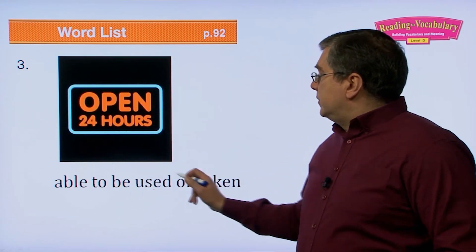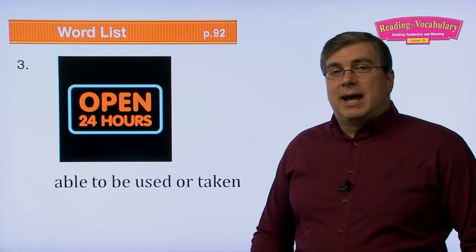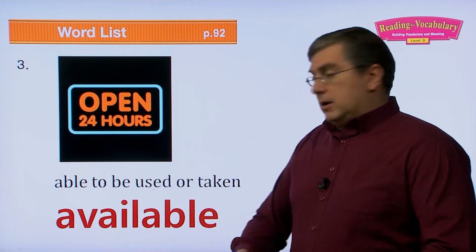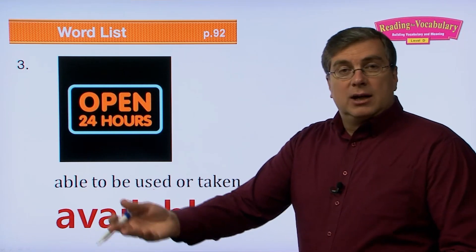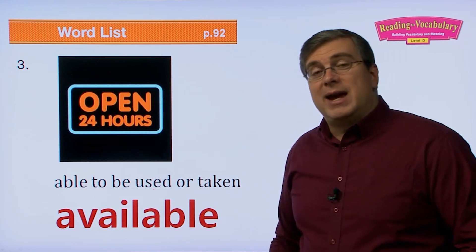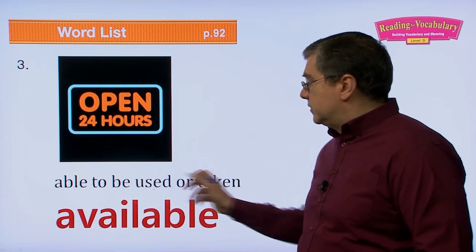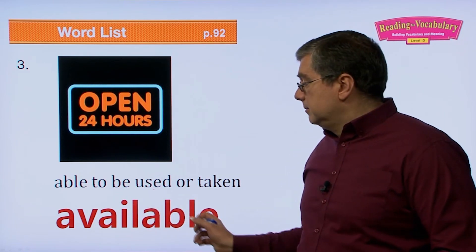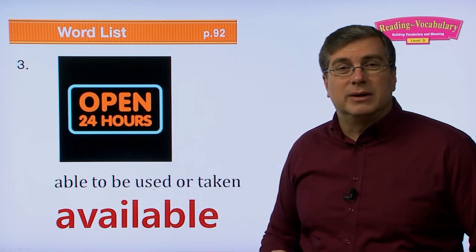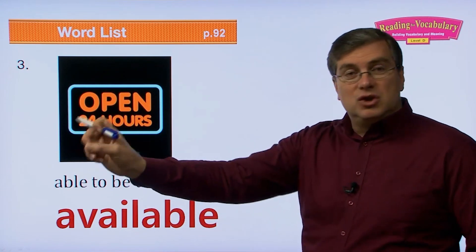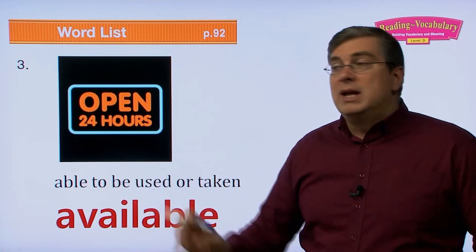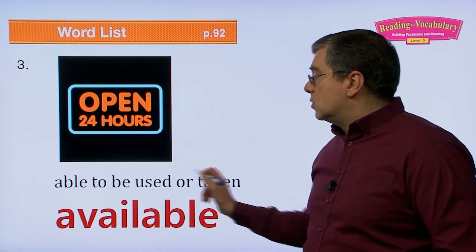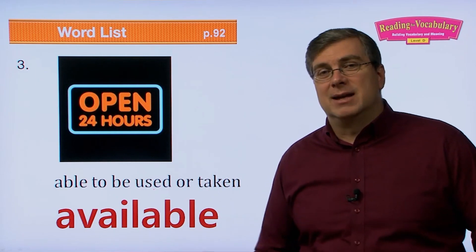Number three, able to be used or taken. We say it's available. If there is a seat empty in a restaurant, you can say is this seat available? Can I sit there? Can I use it? Can I take it? If you go somewhere and you want to be able to use a piece of equipment, for example you go to a bowling alley and there's some shoes on the shelf. Are they available? Yes, you can use those shoes to go bowling. It is available.